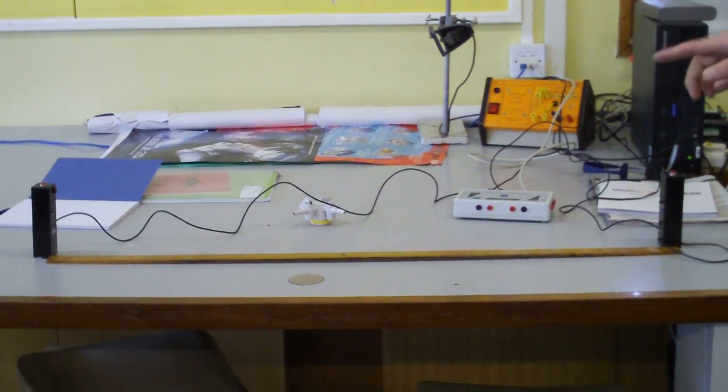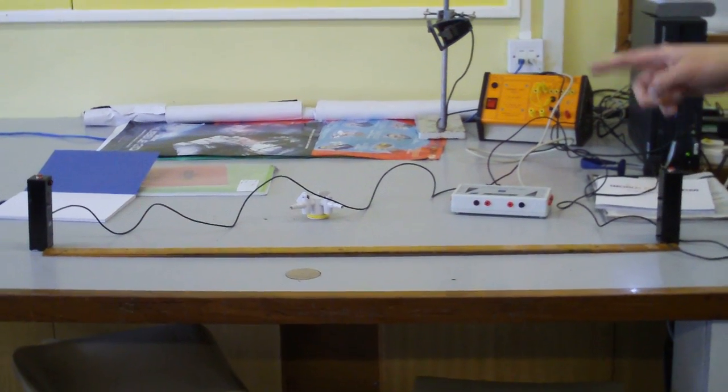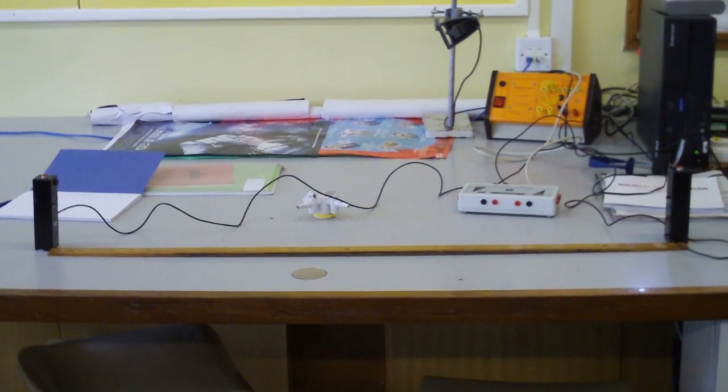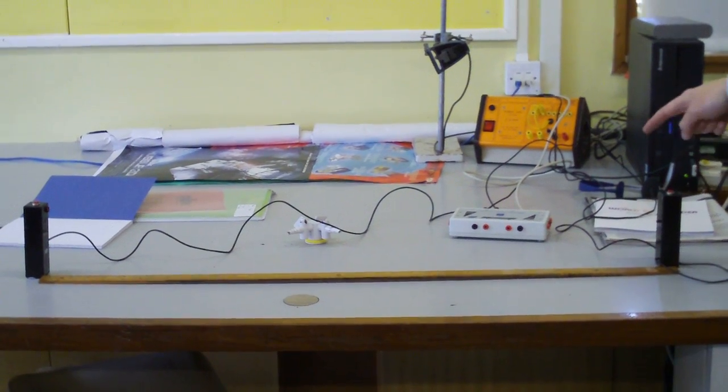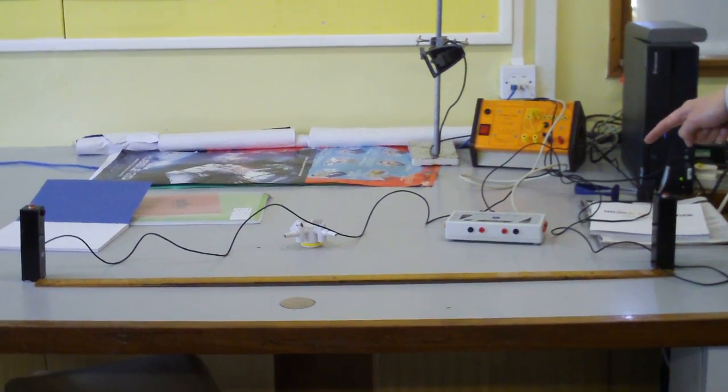I have two microphones a measured distance apart. You can see there that they are a meter apart. What's happening is the sound hits the first microphone, which tells the little data logger in the middle there that the sound has hit it.